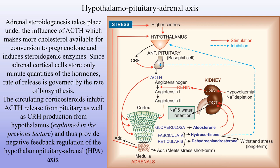Let's revise the concept of the hypothalamo-pituitary-adrenal axis, which is very important for today's lecture understanding. Adrenal steroidogenesis takes place under the influence of adrenocorticotropic hormone, which makes more cholesterol available for conversion to pregnenolone and induces steroidogenic enzymes. Since adrenal cortical cells store only minute quantities of the hormones, rate of release is governed by the rate of biosynthesis. The circulating corticosteroids inhibit ACTH release from pituitary as well as corticotropin-releasing hormone production from hypothalamus, thus providing negative feedback regulation of the HPA axis.